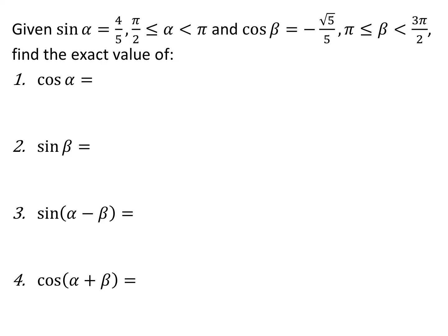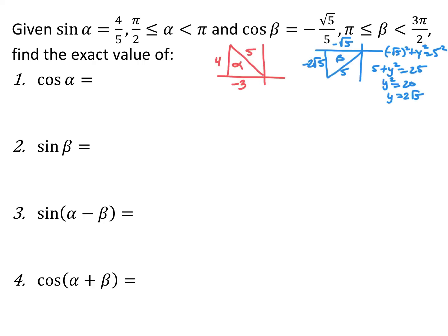These problems don't give us the angle measurements directly. They tell us sine of alpha equals 4/5 where alpha is between π/2 and π, and cosine of beta equals −√5/5 where beta is between π and 3π/2. We need to evaluate other trig functions. This is similar to chapter 6, except now we have two angles and also apply sum and difference formulas. The first step is to draw triangles representing each situation.